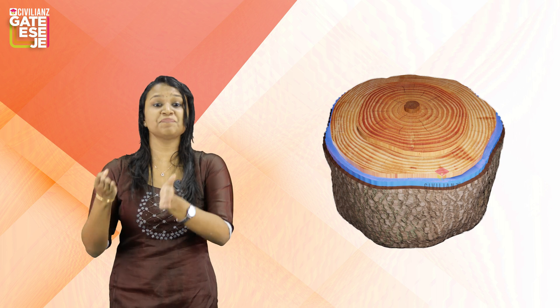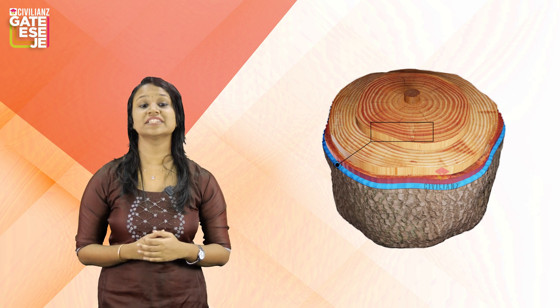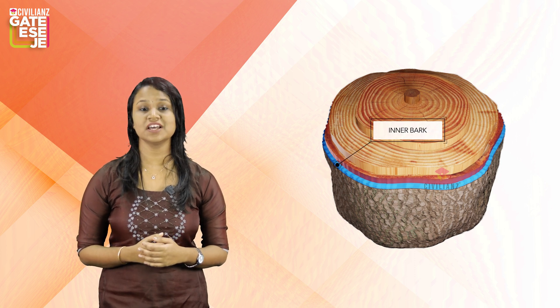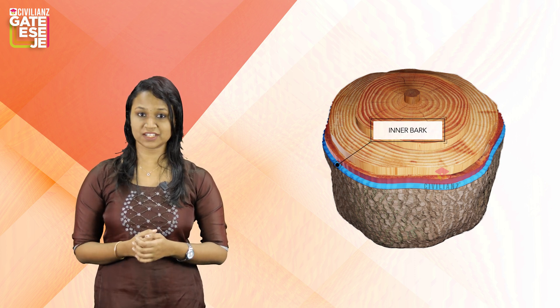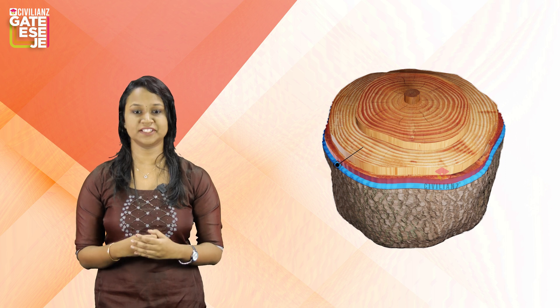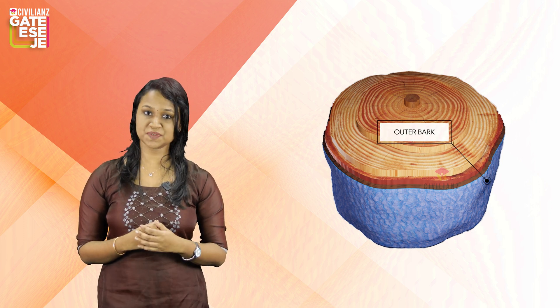The small portion surrounding the sapwood is called cambium. Cambium is the liquid stage of the tree. Cambium generally progresses into sapwood with time. The area surrounding cambium is called inner bark. The function of inner bark is to protect the cambium layer.